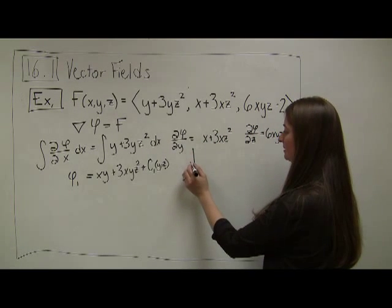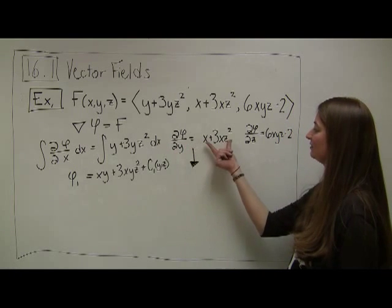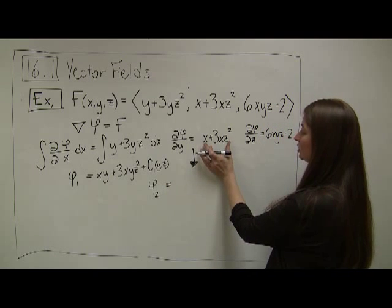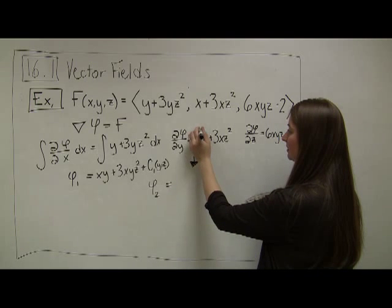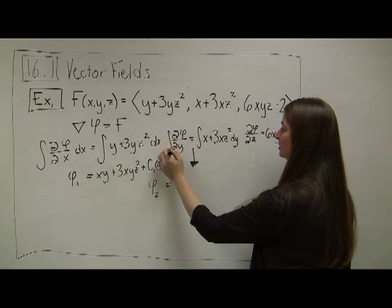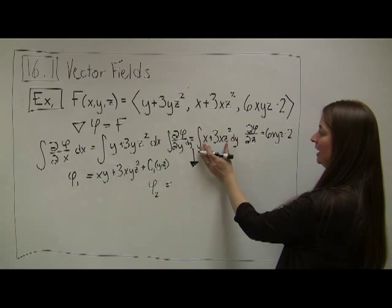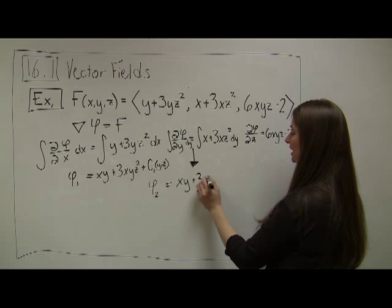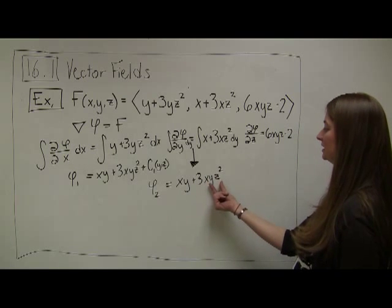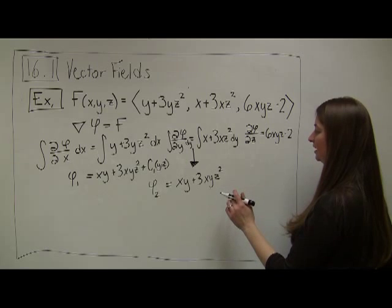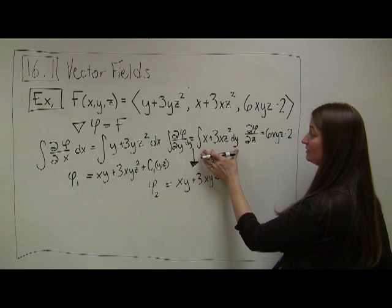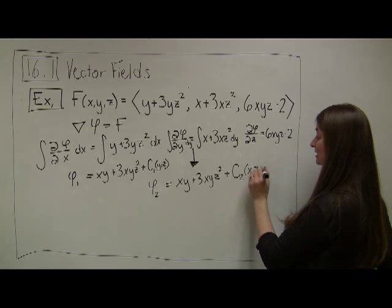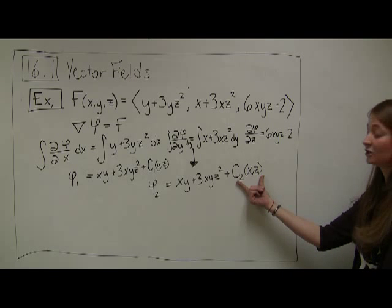Moving on to the second chunk, I anti-differentiate with respect to y, treating x's and z's as constants. Taking the integral of x plus 3xz² with respect to y, I end up with xy plus 3xyz², plus a constant that is a function of x's and z's. This gives me my φ₂ function.